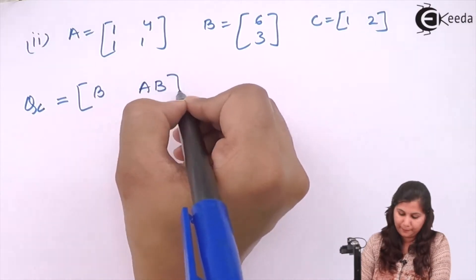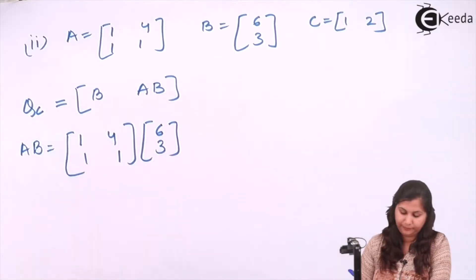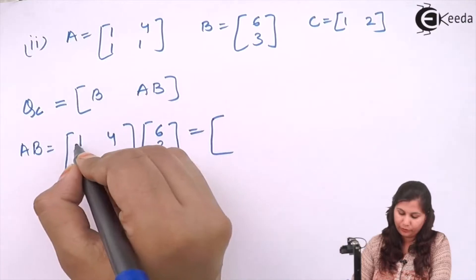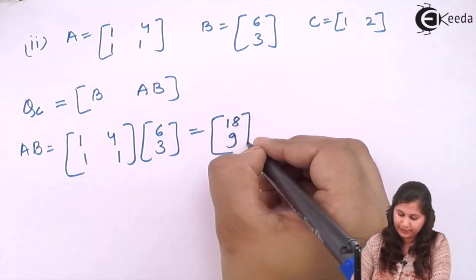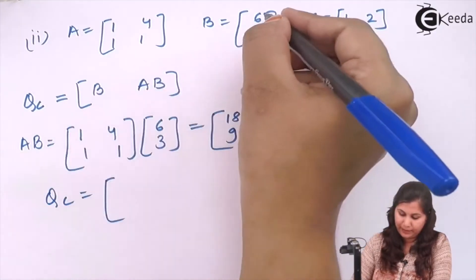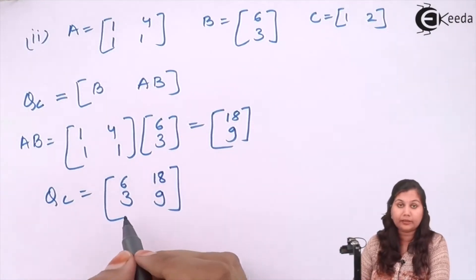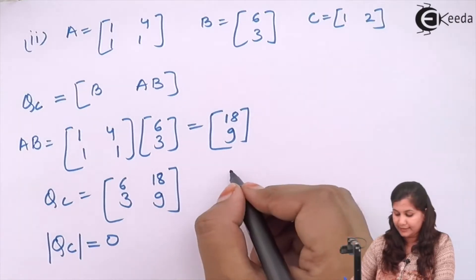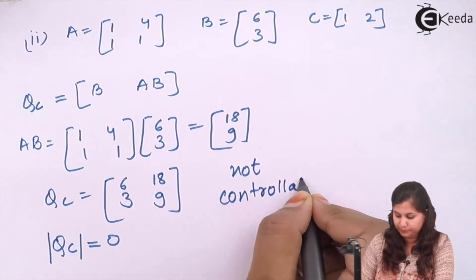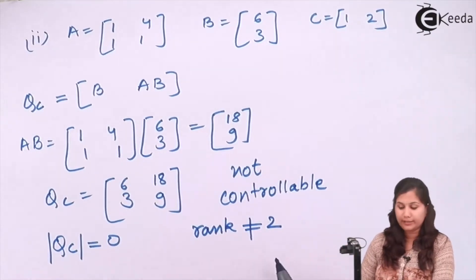QC is [B, AB]. We calculate AB matrix, which gives [18; 9]. The determinant is 6 into 9 minus 3 into 18, so the determinant of QC equals 0. We can say that this system is not controllable, because the rank is not equal to 2. This is a singular matrix.